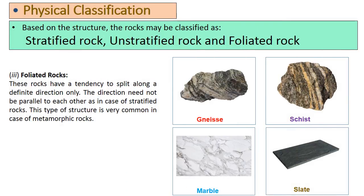Now let's discuss foliated rocks, which is the physical classification of rock. These rocks have a tendency to split along a definite direction only. The direction need not be parallel to each other as in the case of stratified rocks. This type of structure is very common in metamorphic rocks.